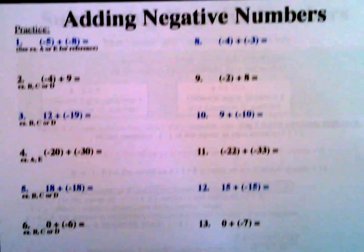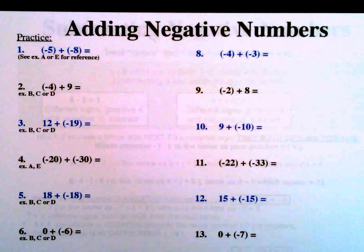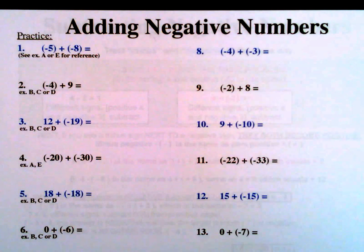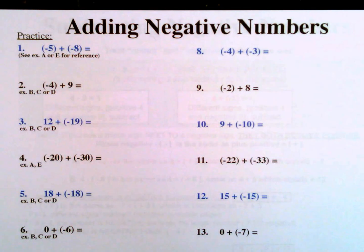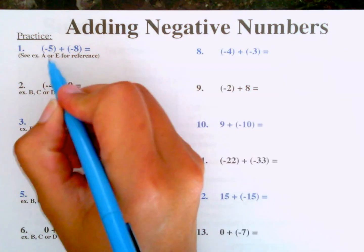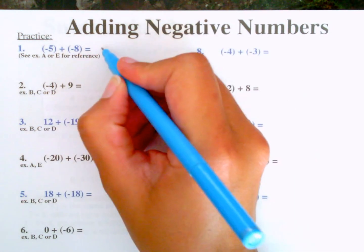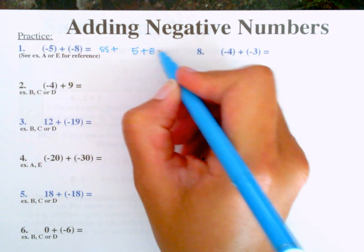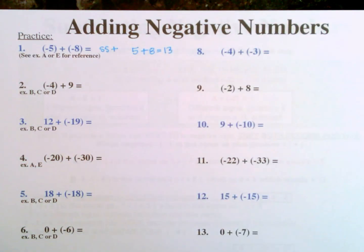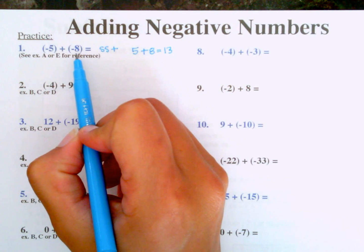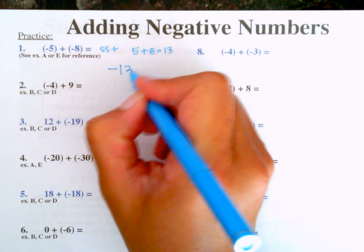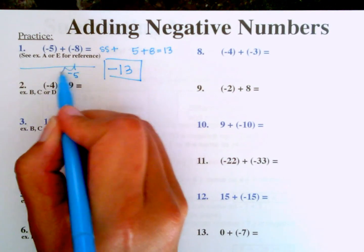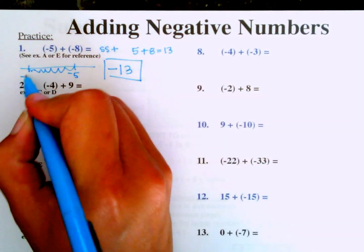If you're following along in the book, the answers are worked out below for extra help. Number 1: negative 5 plus negative 8. Same sign, so we add: 5 plus 8 equals 13. Both are negative, so we added to make a larger negative. The answer is negative 13. On a number line starting at negative 5, going negative 8 more lands us at negative 13.